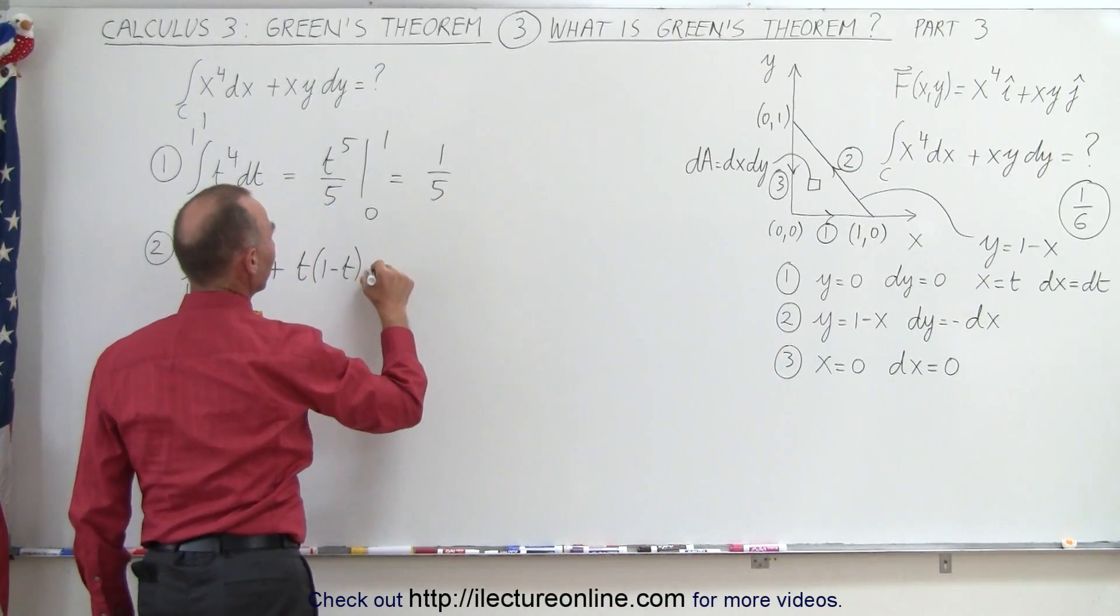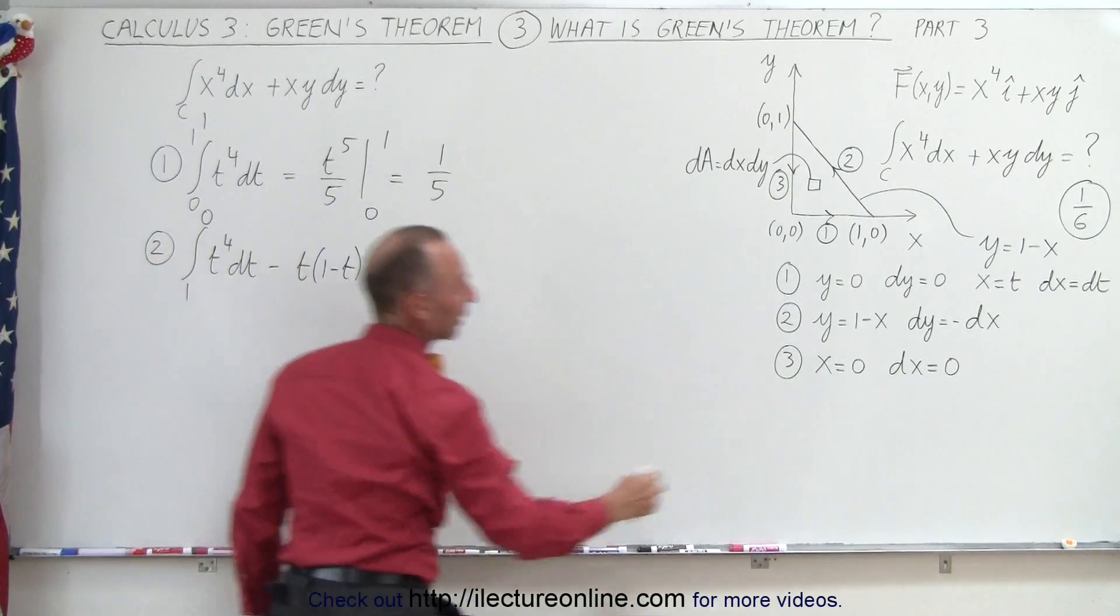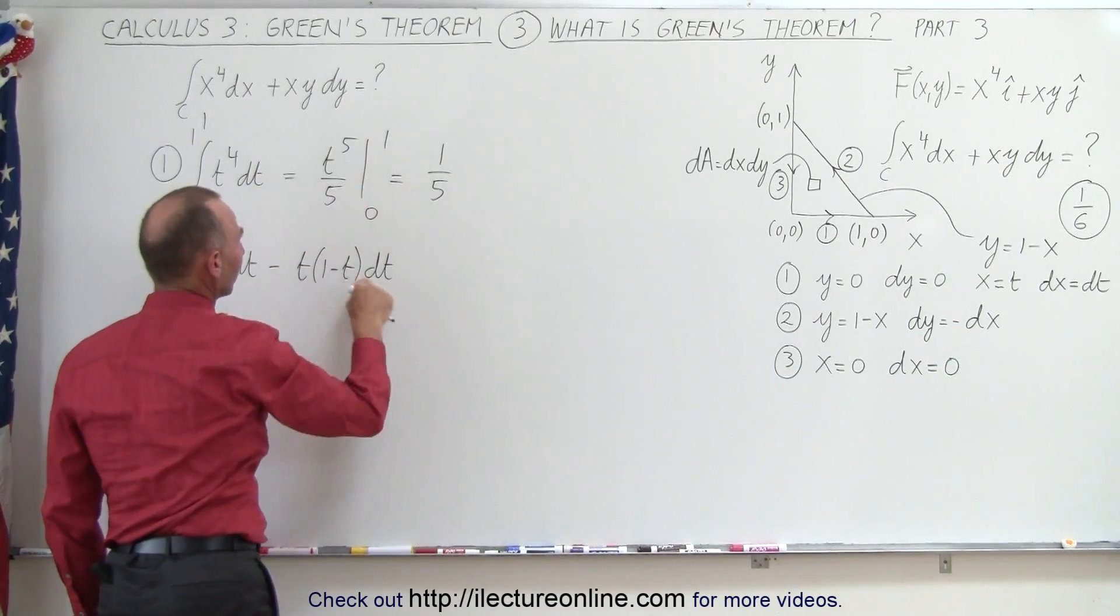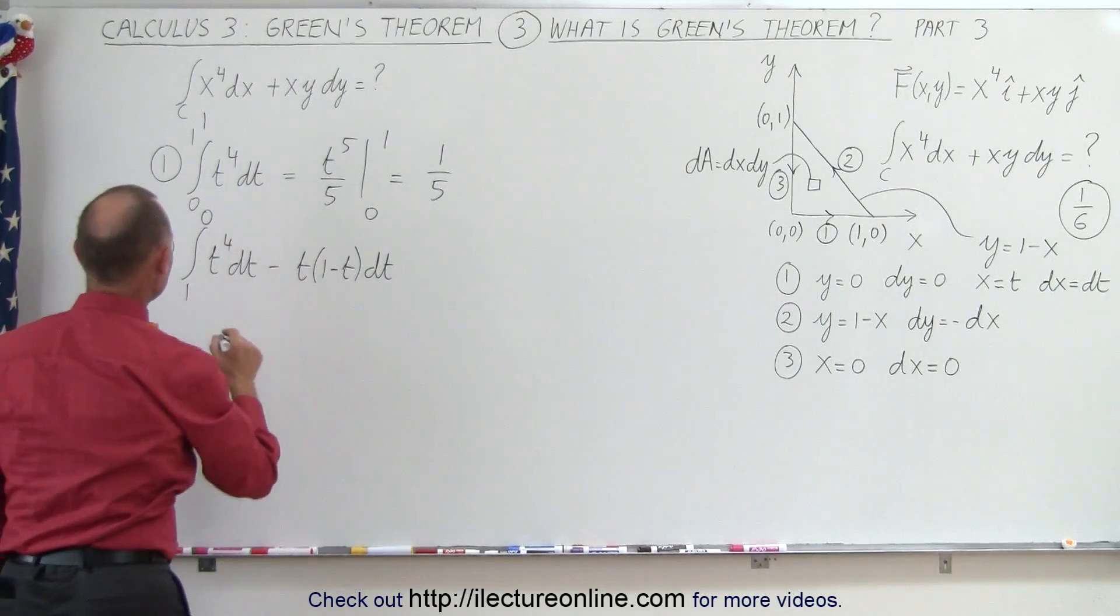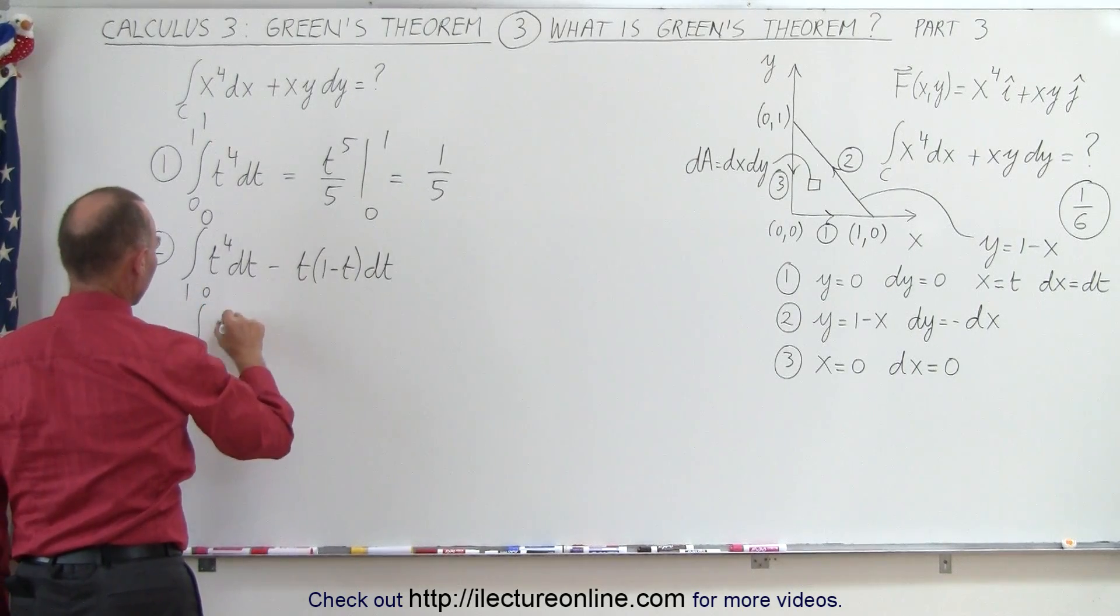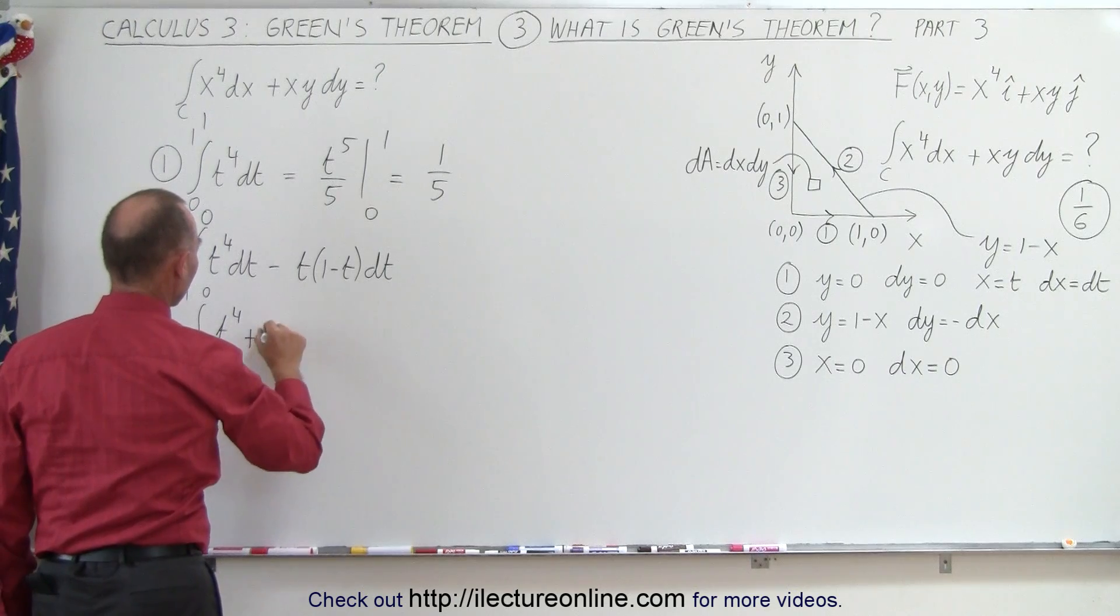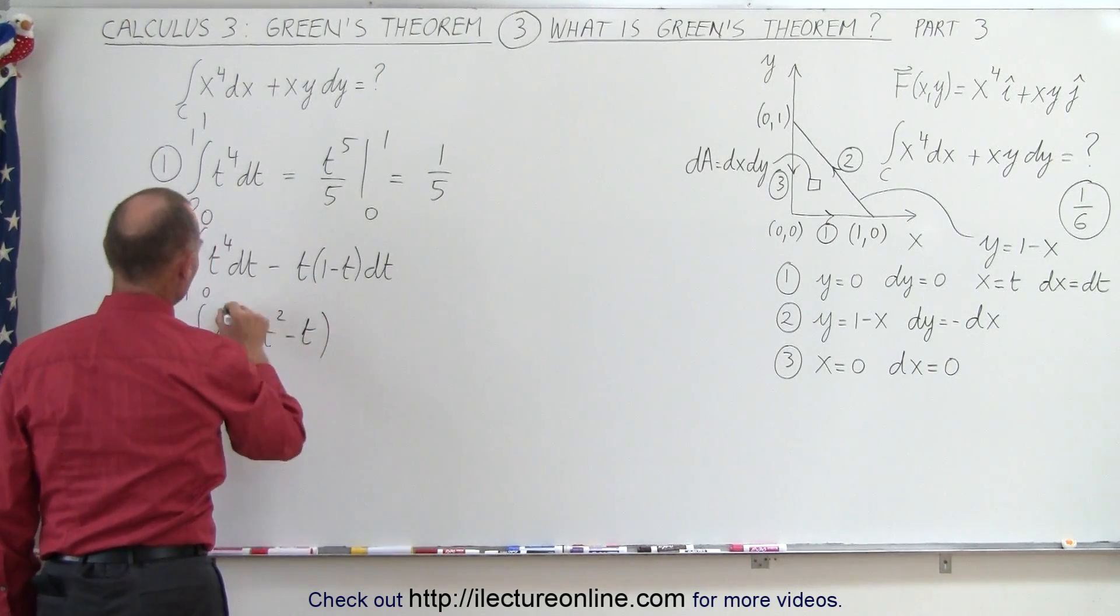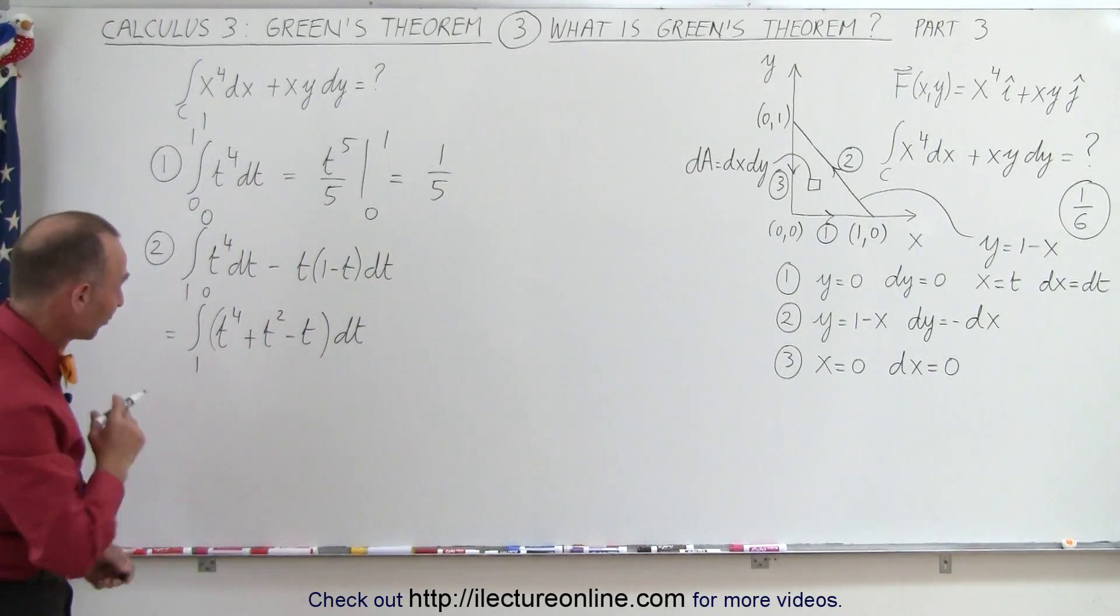That would be a minus dt, so let me put a dt there, and turn this into a minus, because dy equals a minus dx, and so dy will be a minus dt. So making that a little bit cleaner, so this becomes equal to the integral from 1 to 0 of t to the fourth minus t times 1 minus t would be plus t squared, and minus t times dt, and that one is relatively easy to integrate.